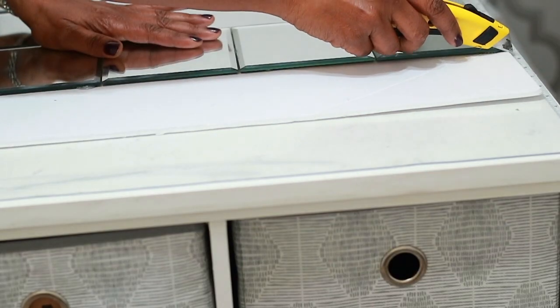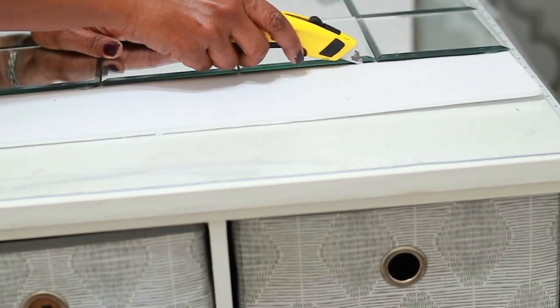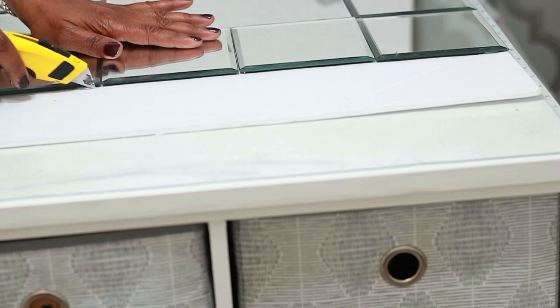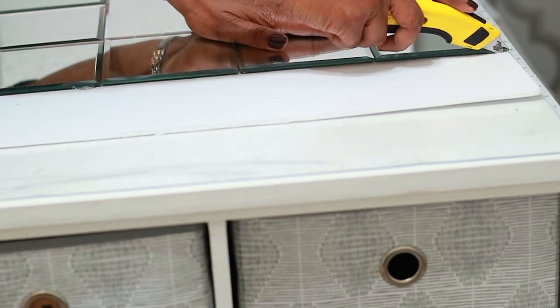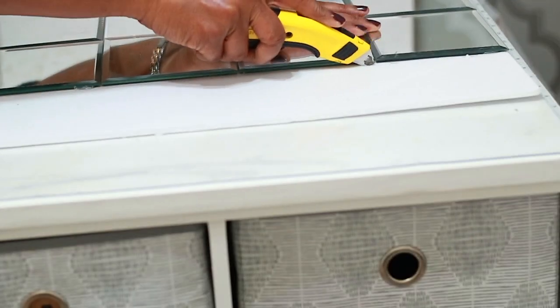Now what I'm going to do is just cut off the very end of the foam board. I'm just going to take my Exacto knife and cut it off, and that's going to give it a clean edge.